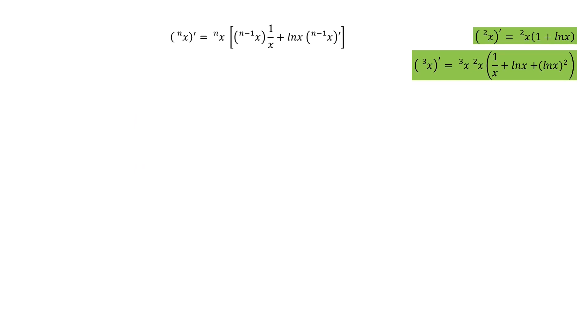And now we can make more green box formulas. All we have to do is plug in the next value of n. n equals 2 and 3 are done. And so now we choose 4. Then our recurrence relation becomes... Our derivative of the 4th tetration is in terms of the derivative of the 3rd tetration. So let's plug it in.